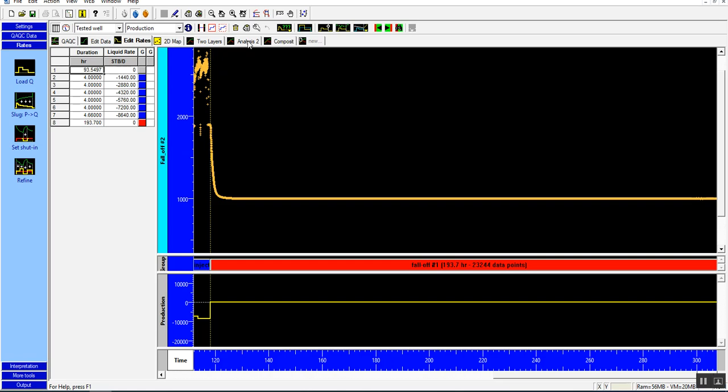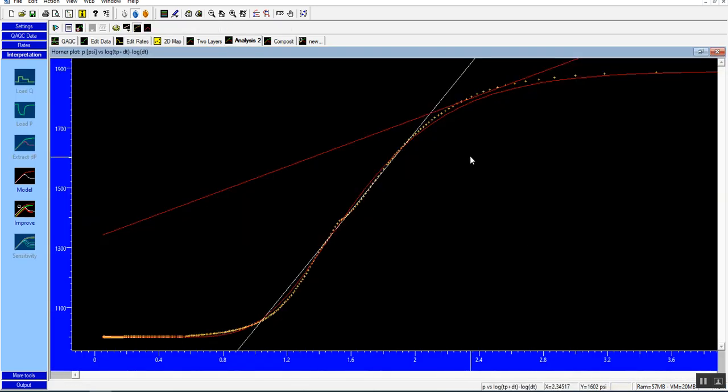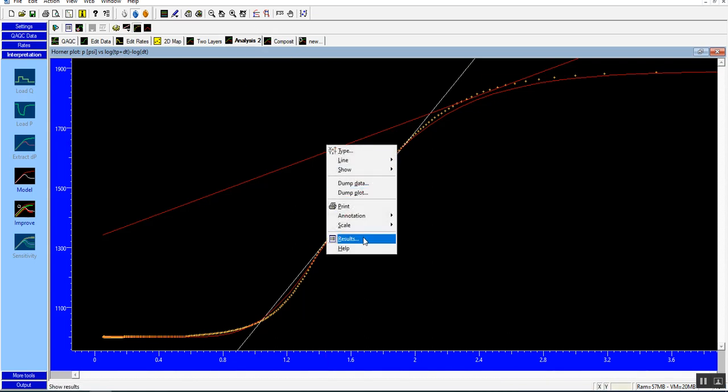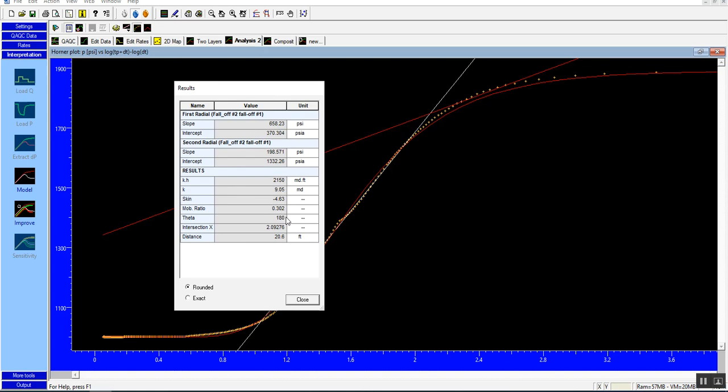As usual you can make your analysis in this entire test. You have to make a horner plot and log-log plot and semi-log plot. For instance this horner plot indicating two slopes or double slope. Just show you the results. Yes, from here intersection slope.